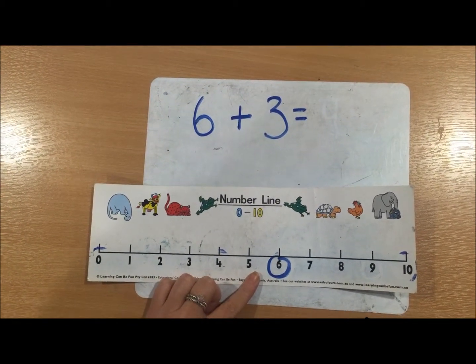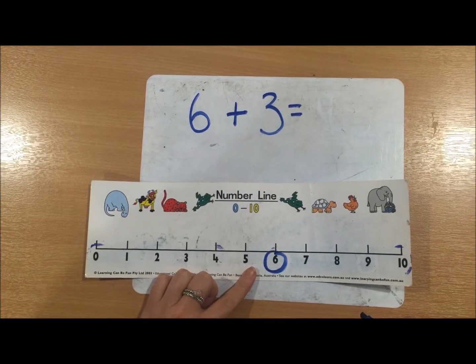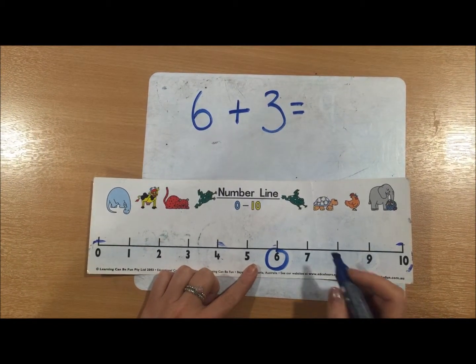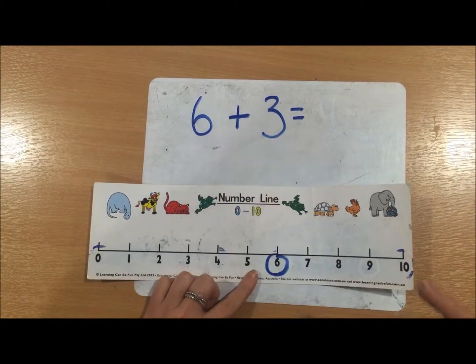The next thing we need to do is jump up the number line using the smaller number or the other number. So the other number is three.